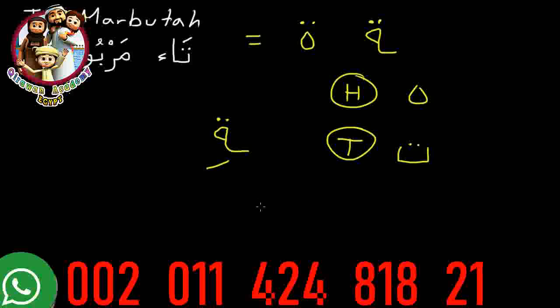This only occurs at the end of words, so you don't have to worry about it a lot. But it does come up all the time with feminine words, and it's generally the indicator of a word being feminine. Not all feminine words have this though, so just keep an eye out for it. Remember that it's either pronounced as a Ha — just a normal H sound — or a Ta — just a T sound.